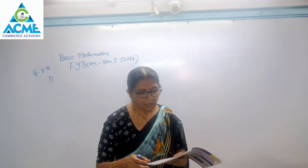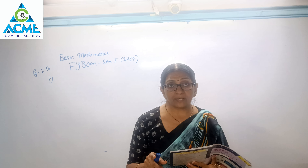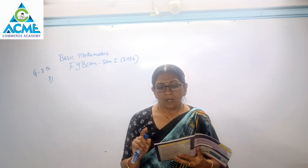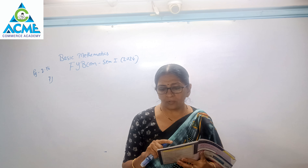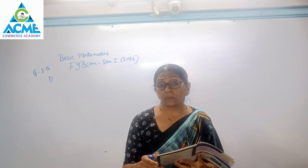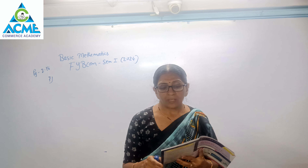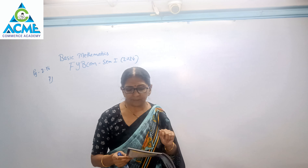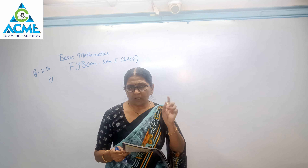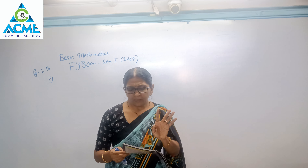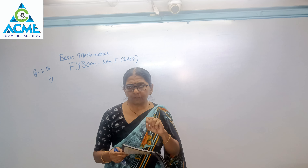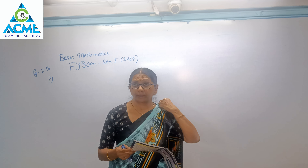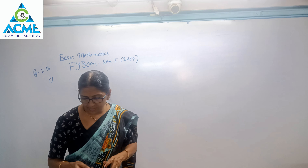I will read the question. An alloy of gold and silver weighs 50 grams and it contains 80% gold. How much gold should be added to the alloy so that the percentage of gold will be increased to 90%? We have an alloy of gold and silver, its weight is 50 grams. Currently 80% gold is present in the alloy, and we need to increase it to 90%.